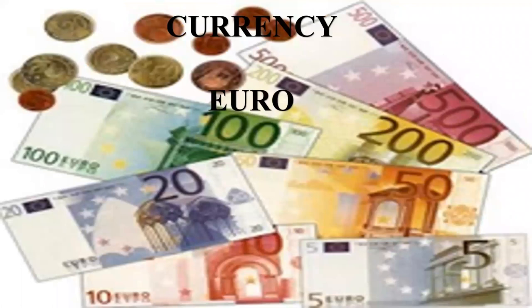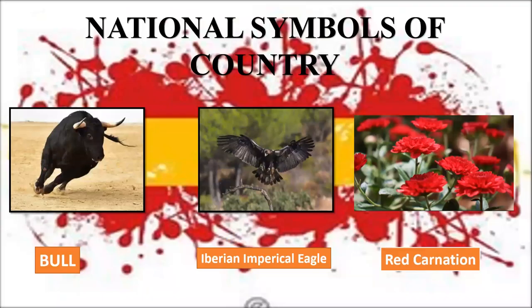Talking about currency, Euro is the currency of Spain. Moving on to national symbols — the national animal is the bull, and the national bird is the Iberian Imperial Eagle. The national flower is the red carnation.